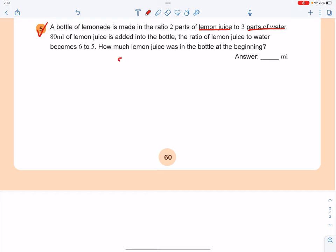So let's see, at first the ratio is 2 to 3. When you add 80 ml of lemon juice, it becomes 6 to 5. Guys, think about this. Water will never change in this process. You don't add any water, right? So the water should be the same number.